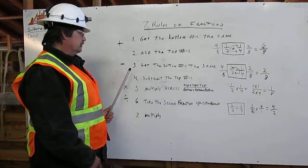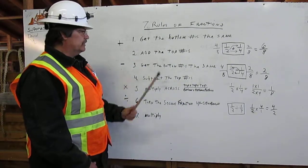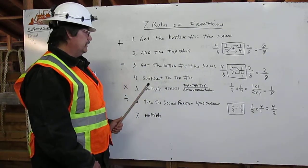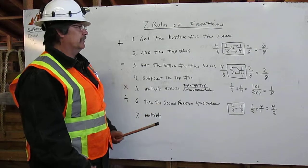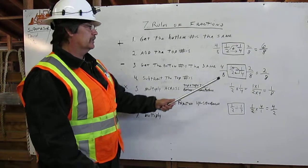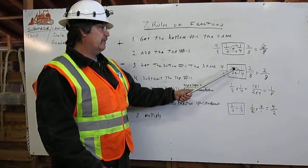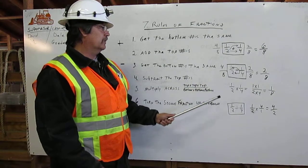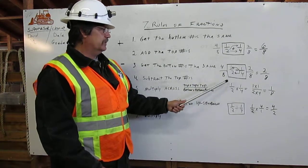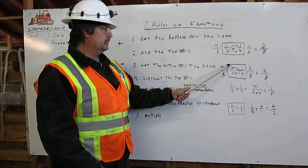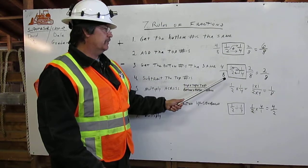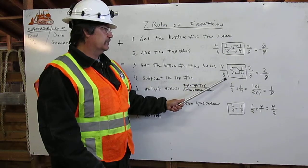For subtraction, first you get the bottom numbers the same, and then you subtract the top numbers. In our example, one-half minus one-quarter — first again I'll draw the box around it to indicate that I'm going to change the numbers.